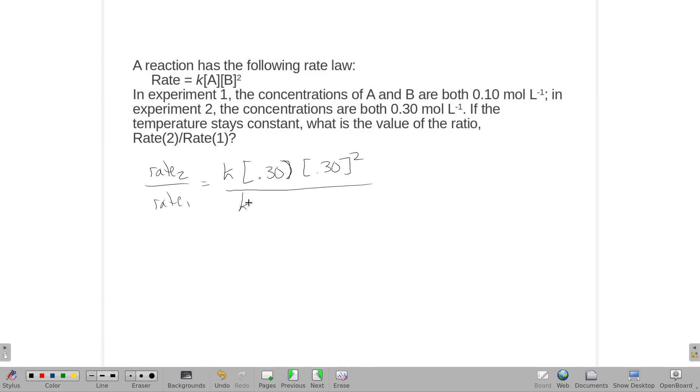For rate one, that's K times 0.1 times 0.1 squared. And the K's would cancel out.